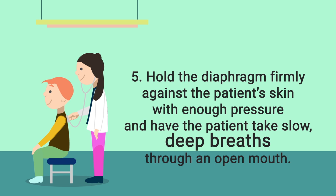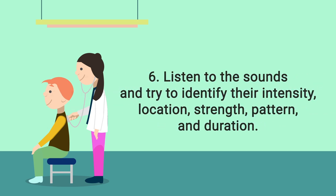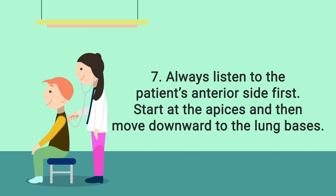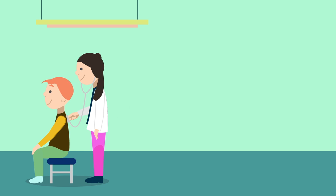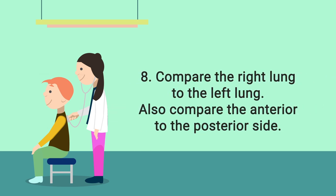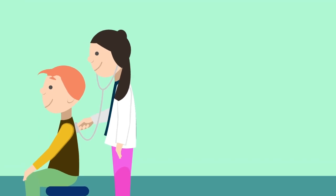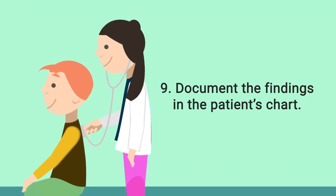With enough pressure, have the patient take a slow deep breath through an open mouth. Listen to the sounds and identify their intensity, location, strength, pattern, and duration. Start by listening on the anterior side — begin at the top of the lungs and move downward to the lung bases — then do the same on the posterior side. Compare the right lung to the left, and anterior to posterior. Once finished, document the findings in the patient's chart.